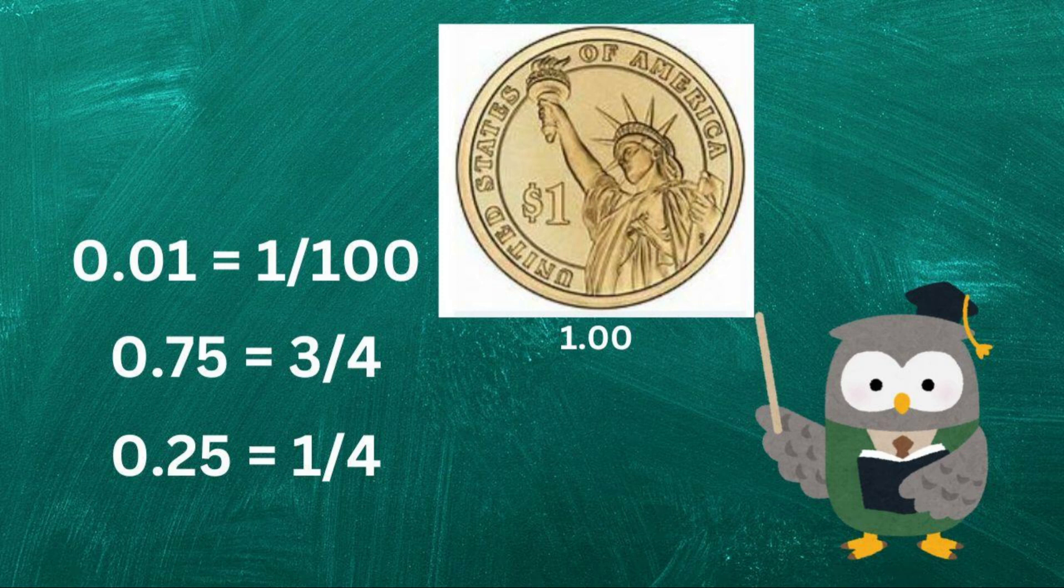0.01 is the same as 1 out of 100. 0.75 is the same as 3 quarters. 0.25 is the same as 1 quarter. Decimals are handy when dealing with money and measurements.